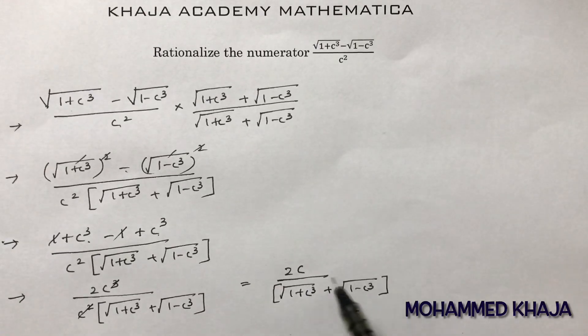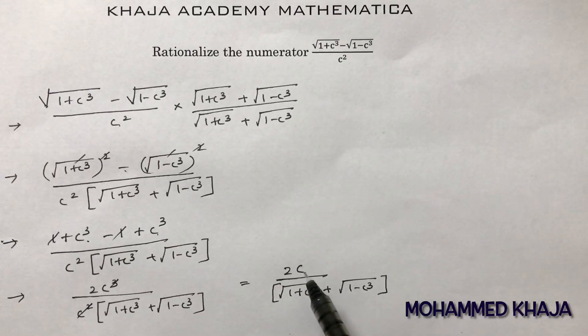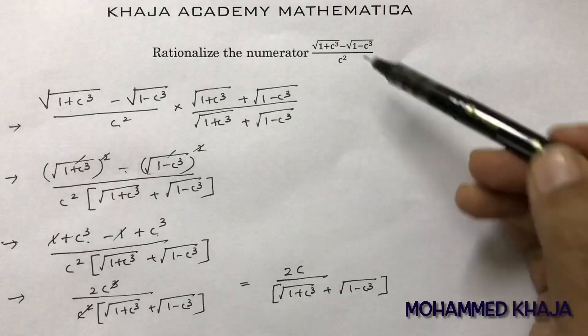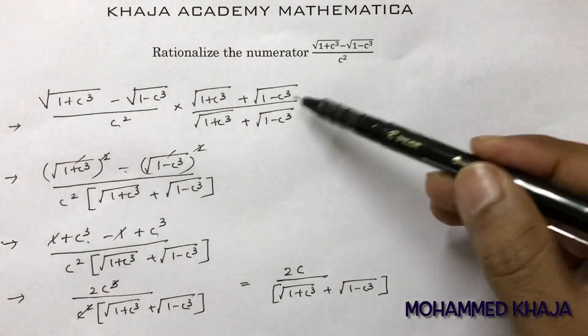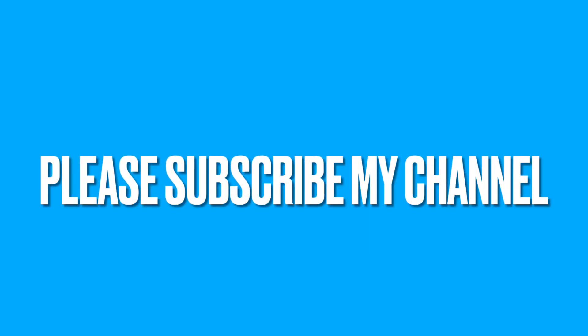So here we have rationalized the numerator. If they say rationalize the numerator, take the numerator and rationalize it in this way — multiplying by the conjugate in both numerator and denominator.